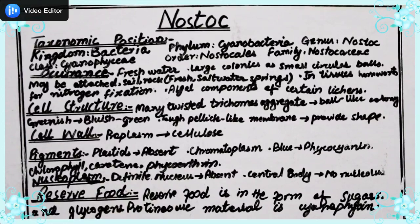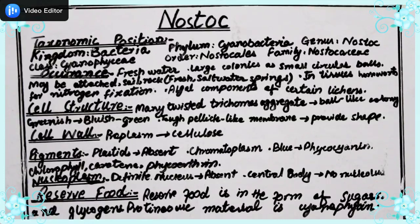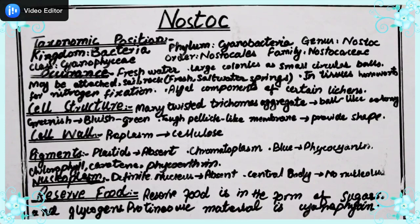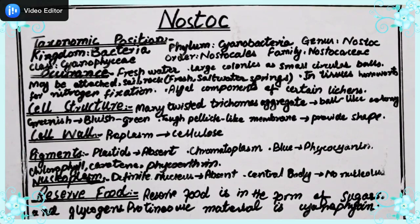Regarding the nucleoplasm: Nostoc does not have a true eukaryotic nucleus. It is just a genetic material present as an aggregate — a central body in the cytoplasm — known as nuclear material. There is no nucleolus, because it is not a true nucleus.